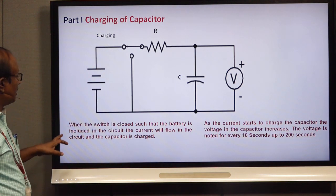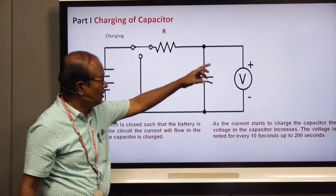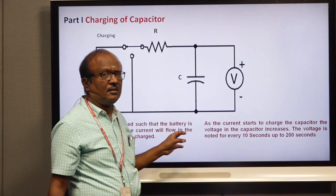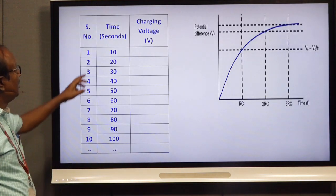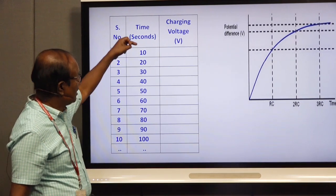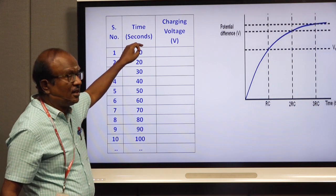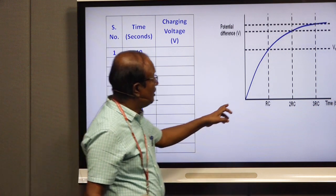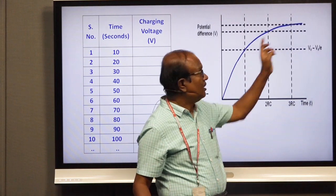Once the switch is closed, current flows through the circuit and the capacitor begins charging. We measure the voltage for every 10 seconds and tabulate all voltages for the corresponding times, starting from 10 seconds, 20 seconds, and so on. At the beginning at 0 seconds the voltage is 0. We then plot the charging graph, which shows exponential growth.